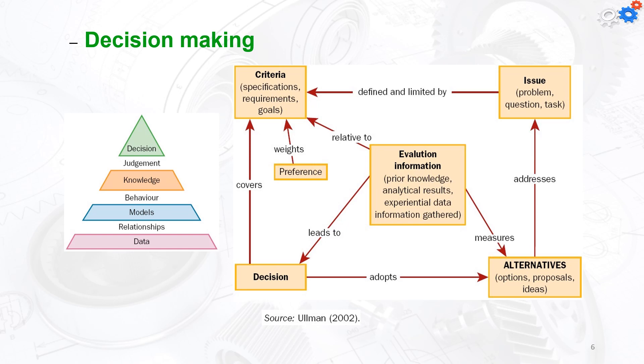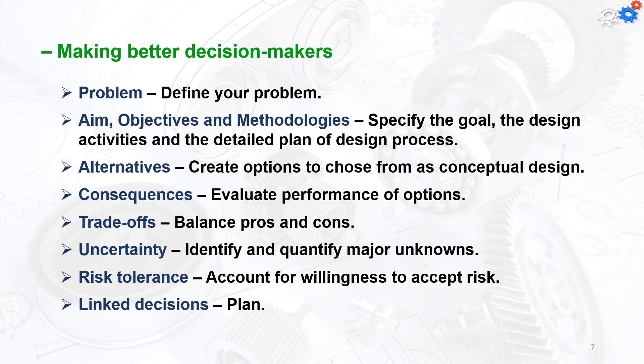For making better decisions, we need to define first what the problem is. We need to specify the goal, the design activities, and the detailed plan. Create alternatives by providing options to choose from as a conceptual design. Then evaluate the performance of options, make trade-offs by balancing pros and cons, perform uncertainty analysis by identifying and quantifying major unknowns, and make risk tolerance by accounting for limits to accept risk. Finally, link all decisions to make the plan.